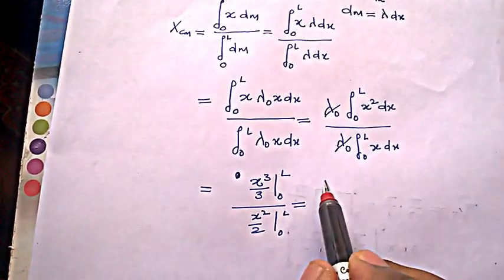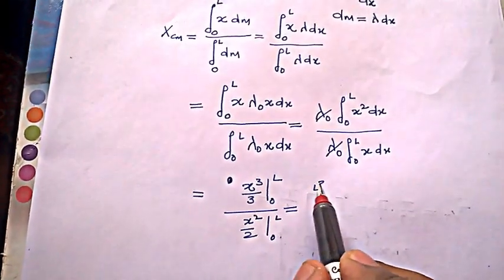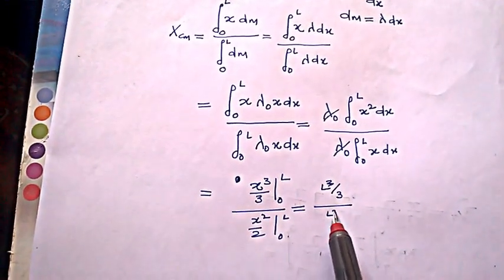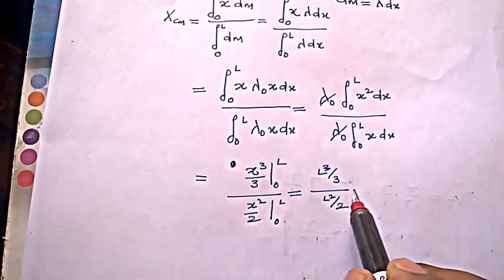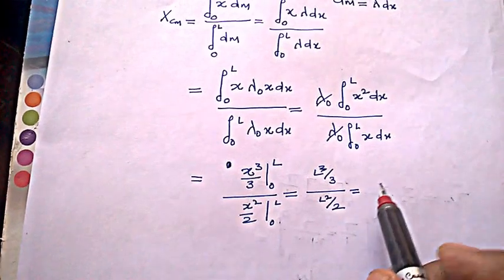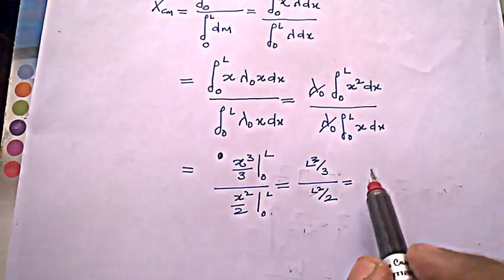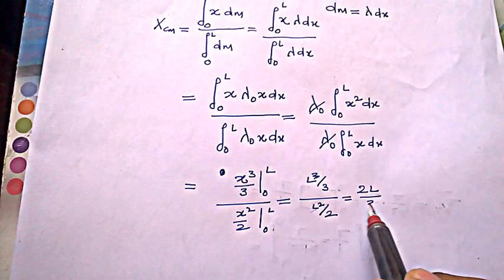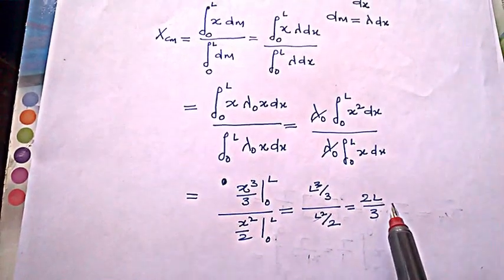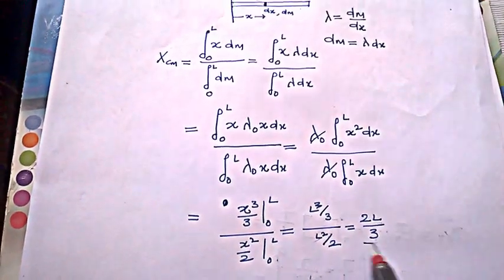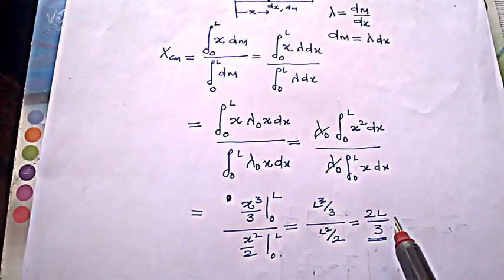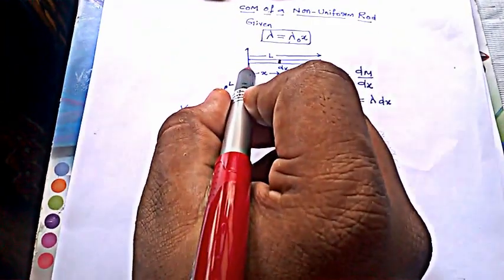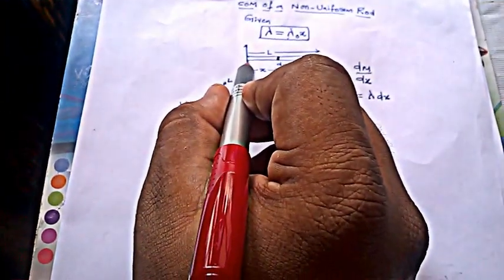The denominator gives the integral of x, which is x squared by 2 from 0 to L. Evaluating the limits, this becomes L cubed over 3 divided by L squared over 2, which equals L squared cancels and we are left with 2L by 3. So the center of mass lies at a distance of 2L by 3 from the origin.